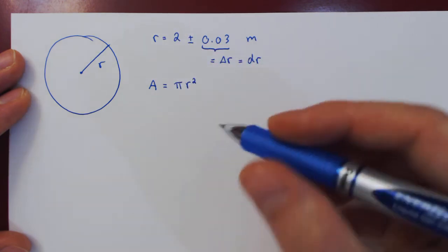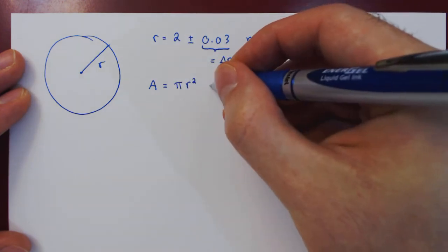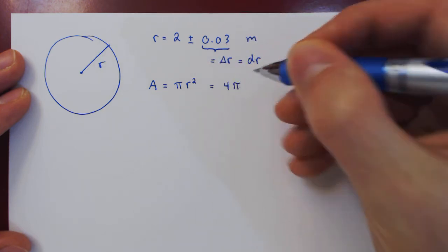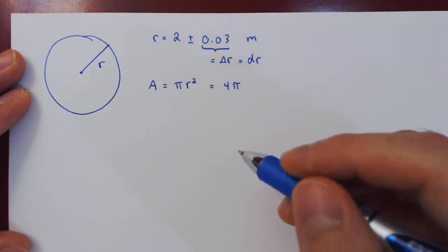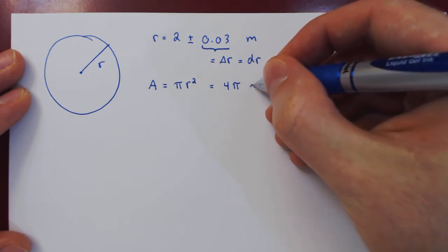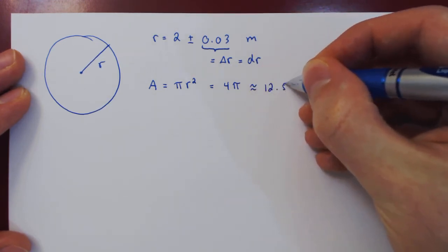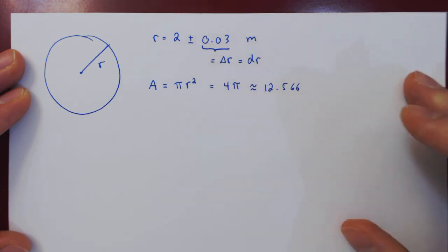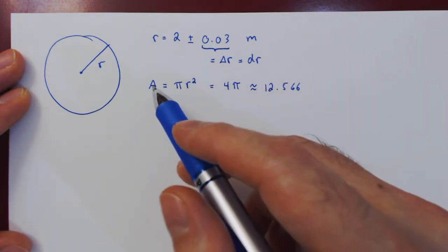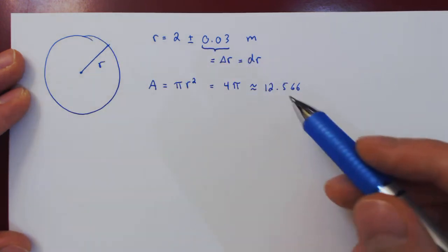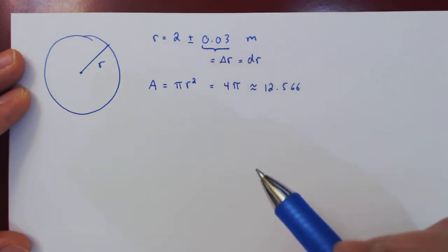If we evaluate at 2, this gives us 2 squared is 4, so 4 pi. Multiplying 4 times pi, you obtain approximately 12.566 meters squared. That was the easy part. We now have the area of the circle to be approximately 12.566 meters squared.